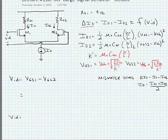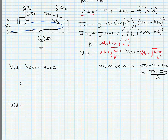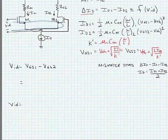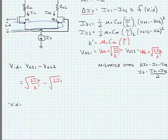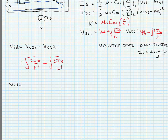If we do a KVL around the loop, we can write VID is equal to VGS1 minus VGS2, and we can do a substitution of the VGS expressions we just developed. Delta ID is defined as ID1 minus ID2.